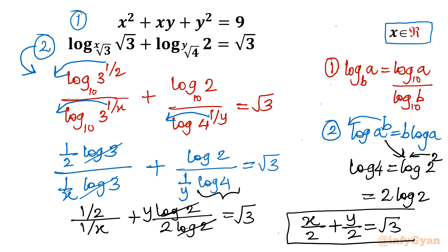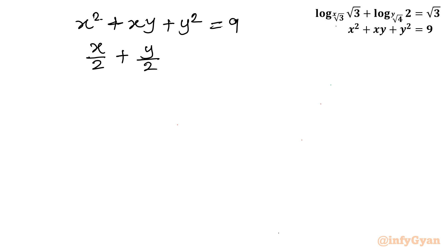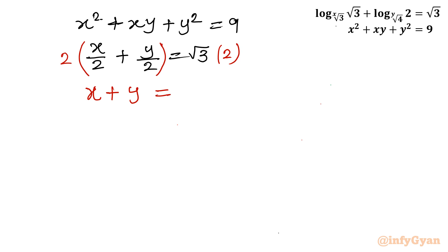Now let me frame the system of equations. The first equation remains as is: x squared plus xy plus y squared equal to 9. The second equation, which we just derived, is x over 2 plus y over 2 equal to root 3. We will multiply the second equation by 2 to clear the denominators.